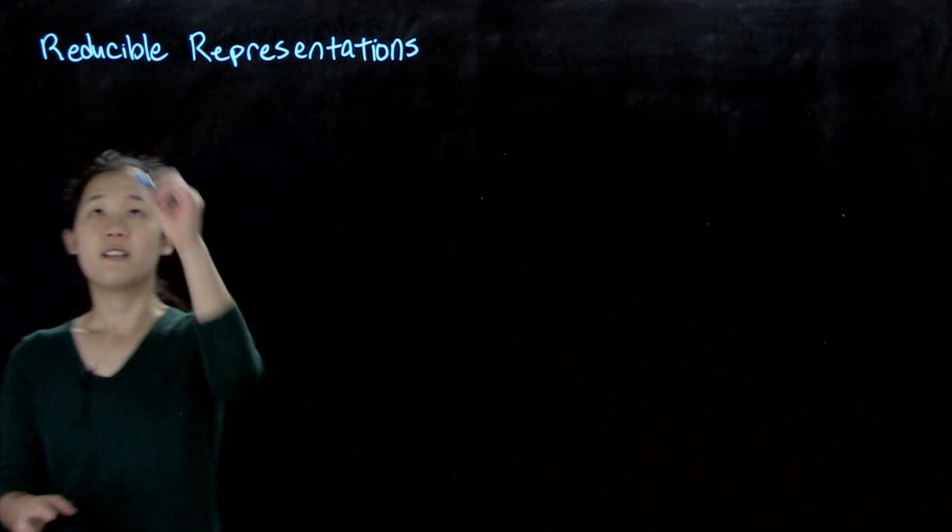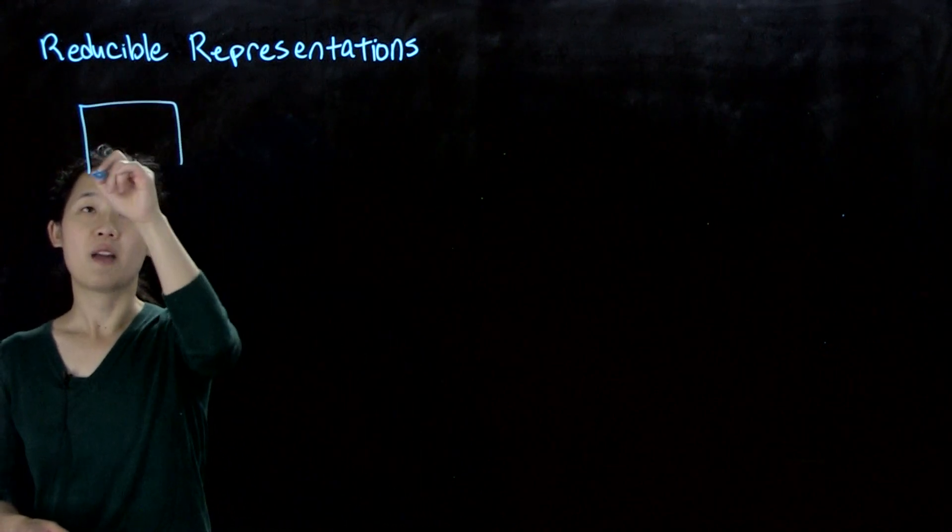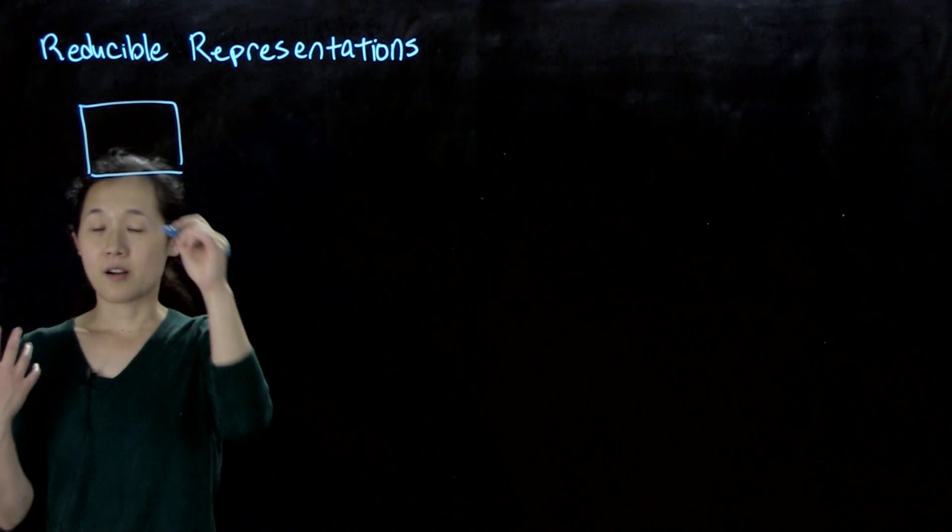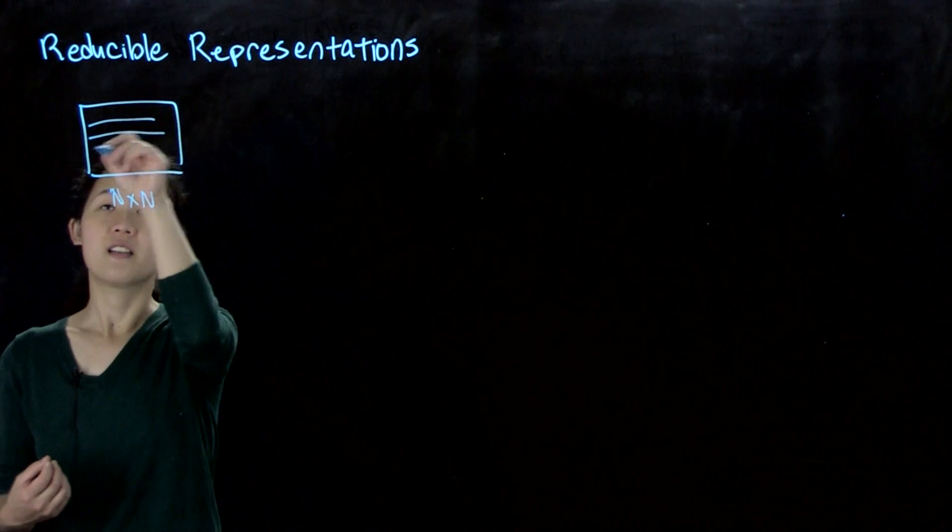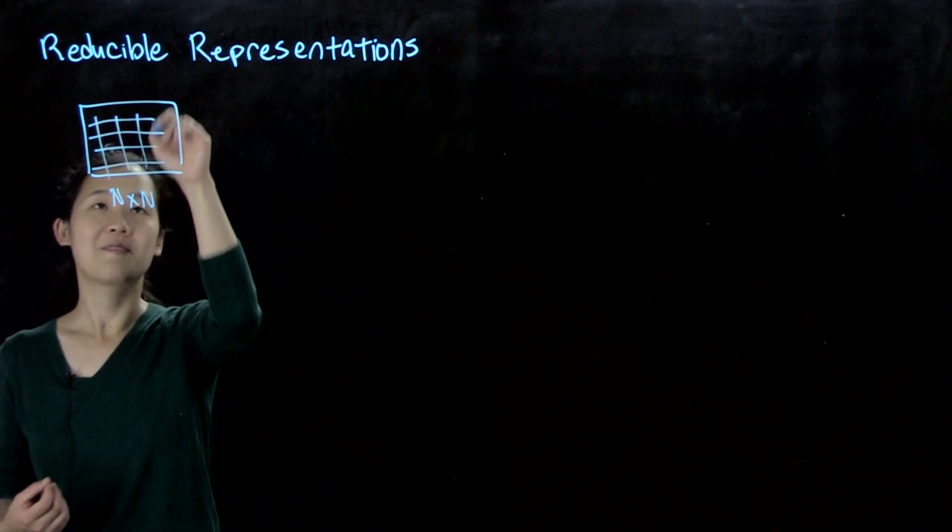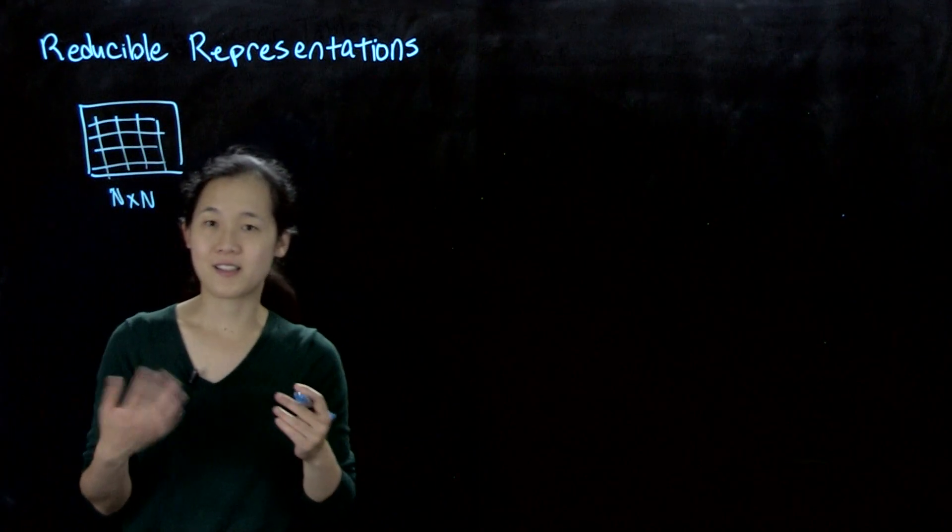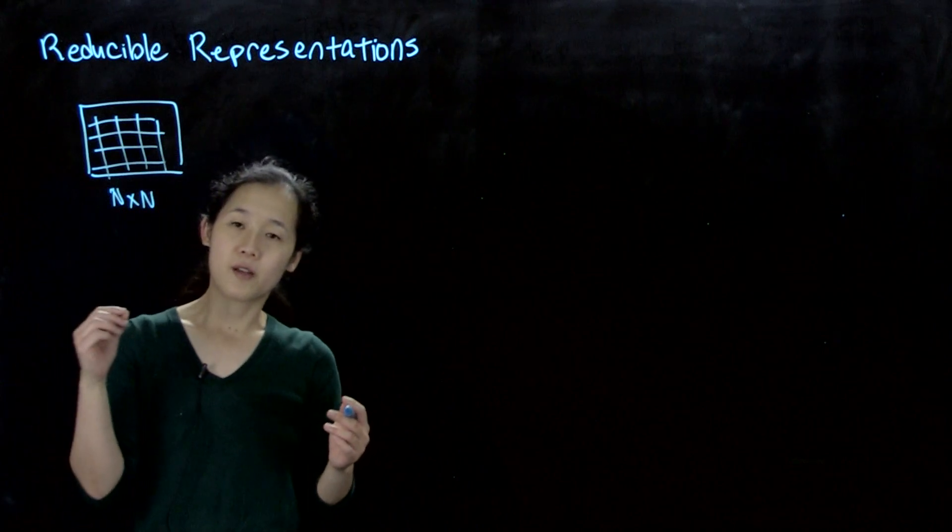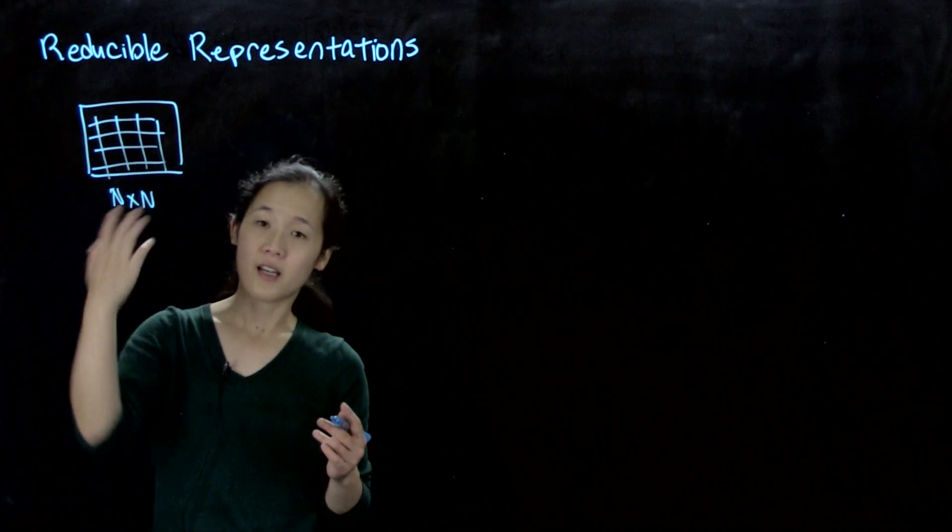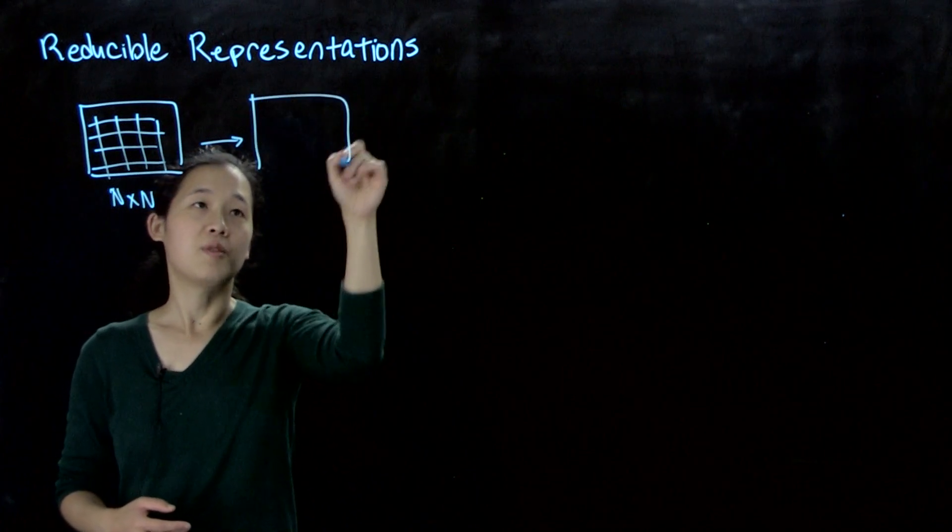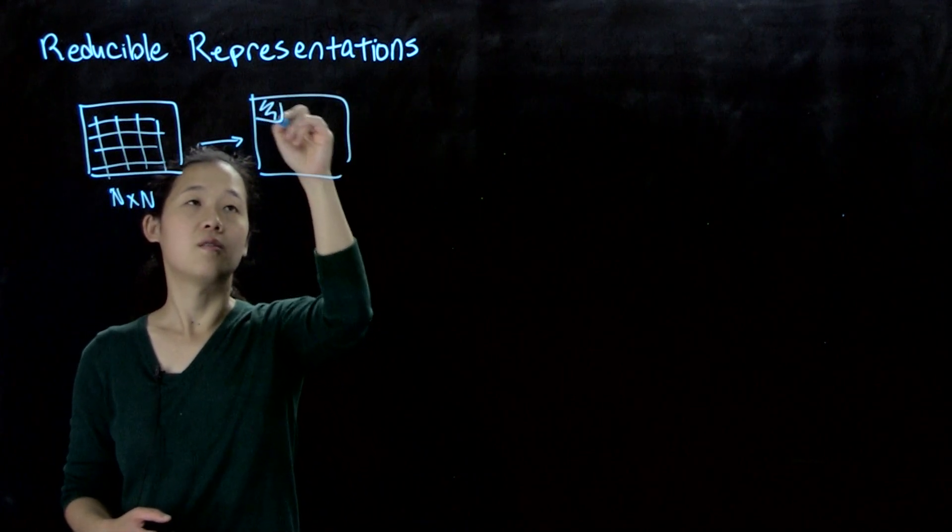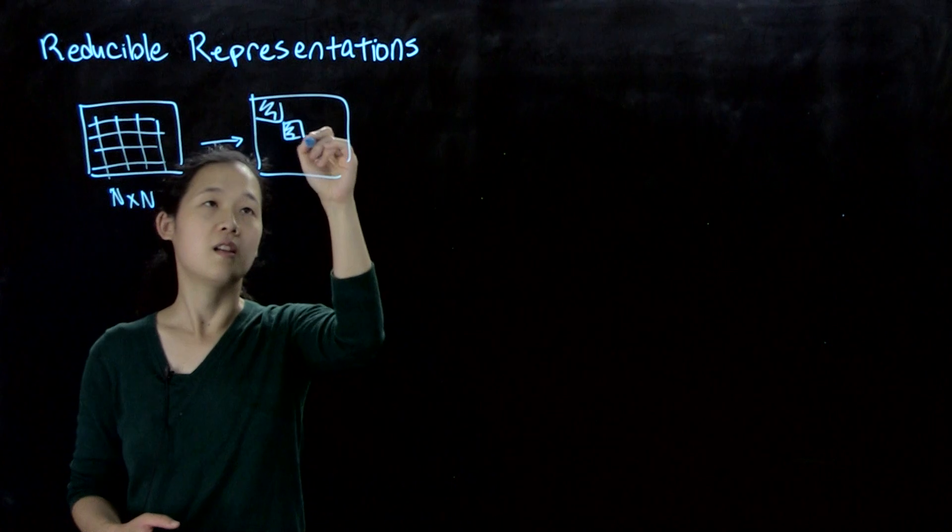The point is that if we have our basis set of n elements, our symmetry operations will end up being n by n matrices, which, as we saw in class, is really hard to work with. So we can use the traces and the characters, and what we want to do is be able to block diagonalize them into their own individual irreps.